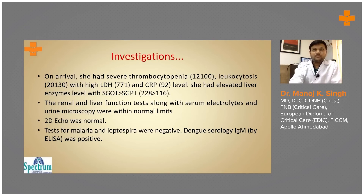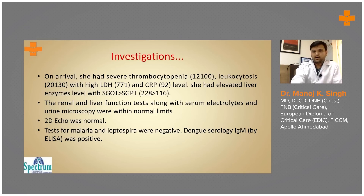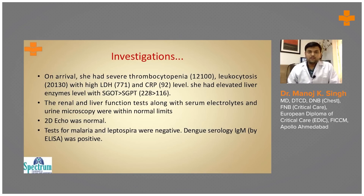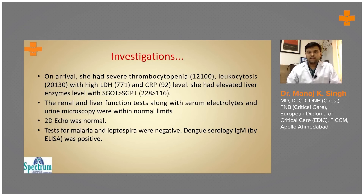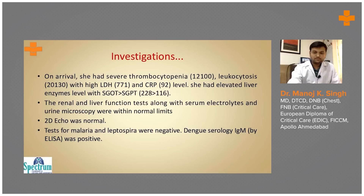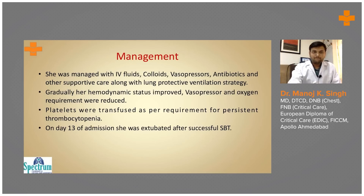Investigations on arrival showed severe thrombocytopenia, leukocytosis, high LDH, and high CRP. She had altered liver profile with SGOT greater than SGPT. Renal function, serum electrolytes, and urine microscopy were within normal limits. 2D echocardiogram was normal. Tests for malaria and leptospira were negative. Dengue serology IgM by ELISA was positive. CCHF and NIV Pune were also ruled out as negative.